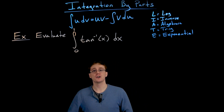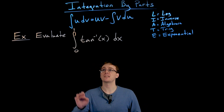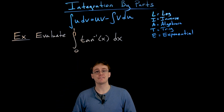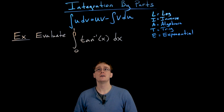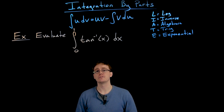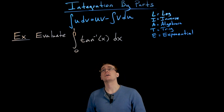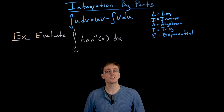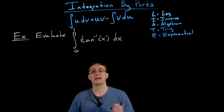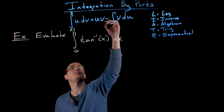Welcome back everyone. In this video we're going to look at another example of using integration by parts, and this time we're going to use it for a definite integral. Our integral of interest is the definite integral from 0 to 1 of arctangent, and we're going to use the definite integral version of our integration by parts formula.